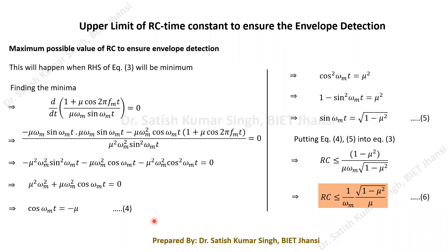Welcome again to the ninth lecture of this course module on Communication Engineering. In the last lecture we discussed envelope detection of the conventional AM signal. In today's lecture we are going to look at what is Double Sideband Suppressed Carrier (DSBSC) technique.